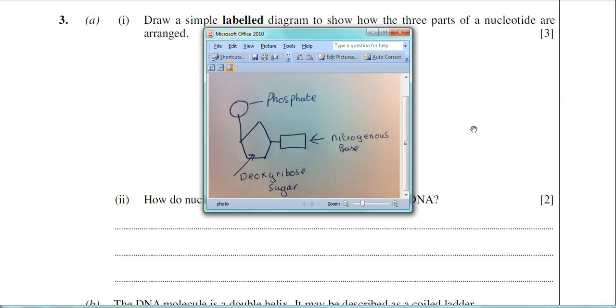The phosphate is the circle which is always joined to carbon 5 on the deoxyribose sugar. The nitrogenous base then is at carbon number 1. So the nitrogenous base is shown as a rectangle.